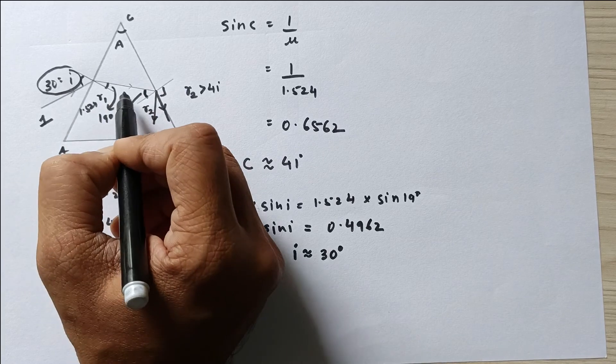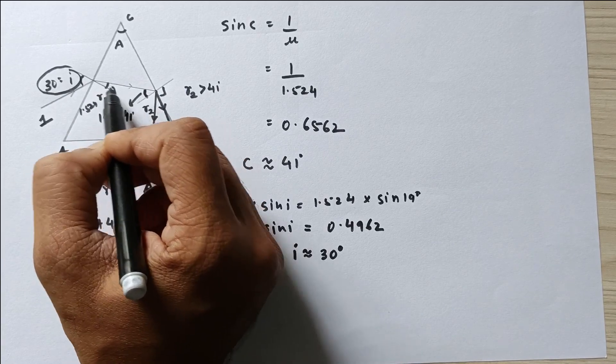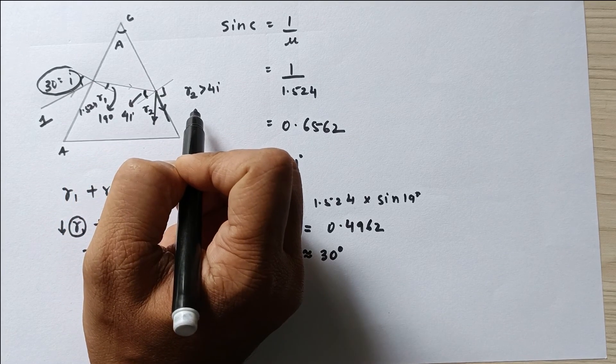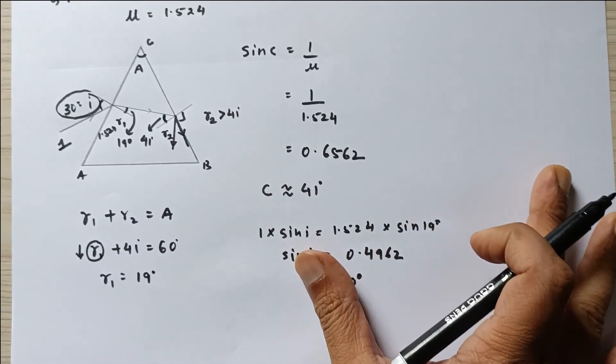If you even increase the angle beyond 31 just by a little bit, this will increase and this will decrease because the sum of these two has to be 60 degrees. So if this decreases, then the ray will undergo refraction. I hope you have understood the problem.